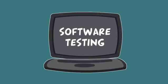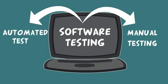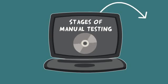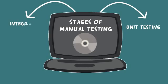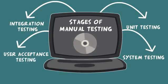Software testing is mainly of two types: manual and automation testing. There are different stages for manual testing, like unit testing, integration testing, system testing, and user acceptance testing.